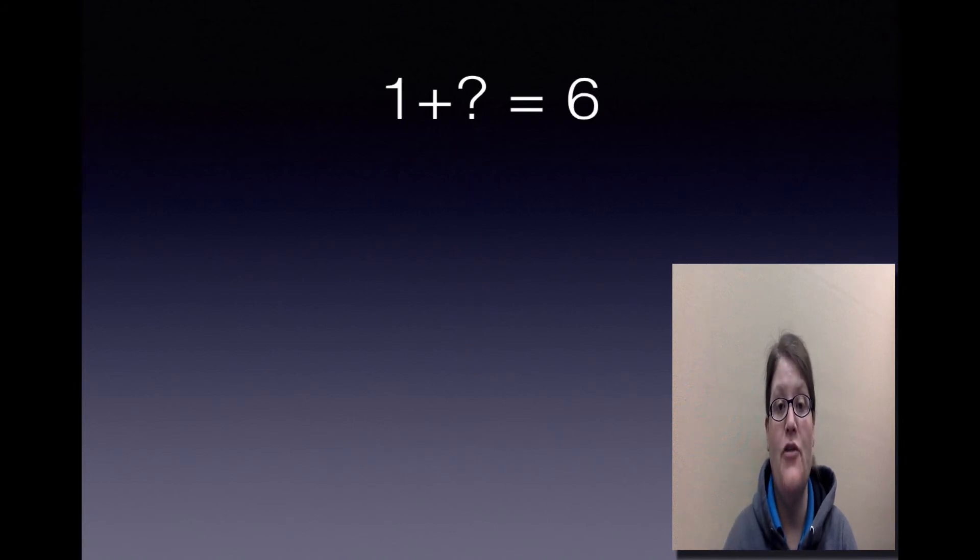Last one. You tell me what to do. I'm going to count on from what number? Correct, 1. When will I stop counting on? When I get to 6. Exactly, because that's the sum. So I've got 1, 2, 3, 4, 5, 6.